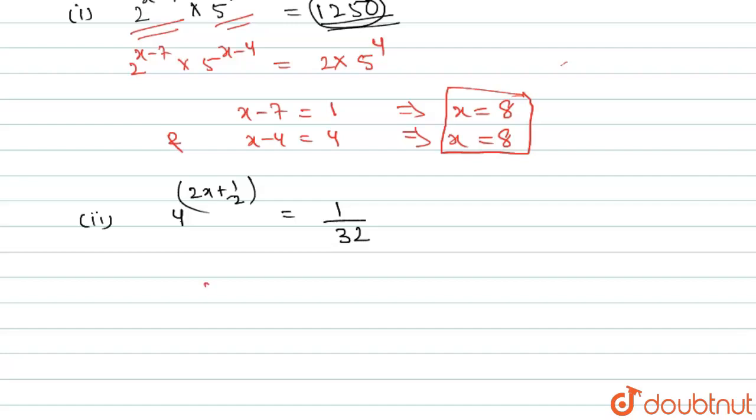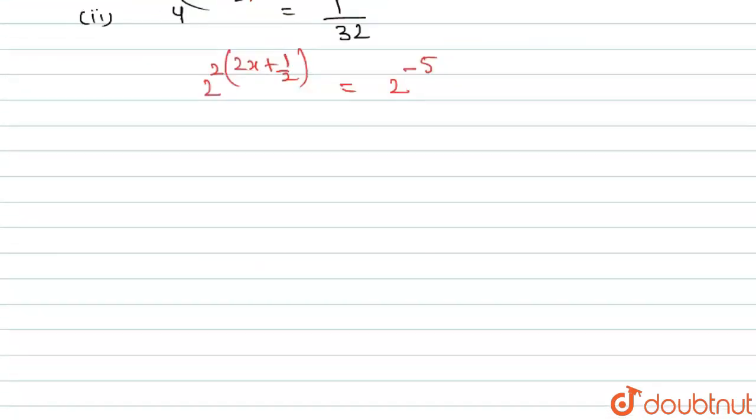4 can be written as 2 squared with the power 2x plus half, and 1 by 32 can be written as 2 to the power minus 5. Now the bases of both LHS and RHS are the same as 2, so we can equate the powers. On equating the powers, we get 2 times 2x plus half equals minus 5. Upon solving this, we get 4x plus 1 equals minus 5, and the value of x equals minus 3.